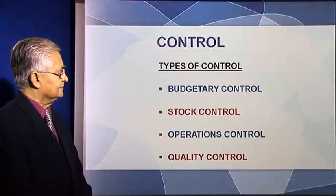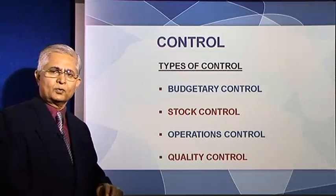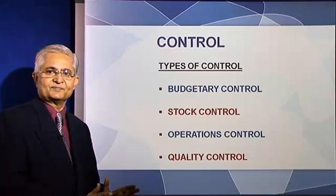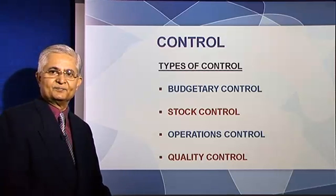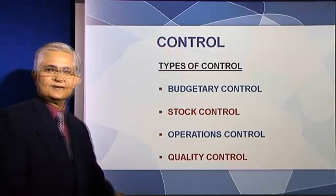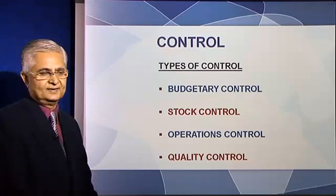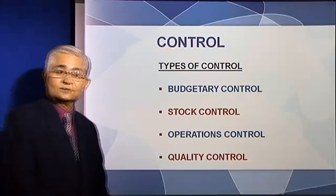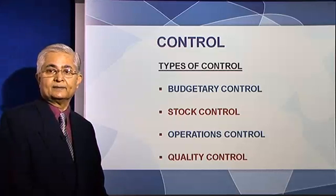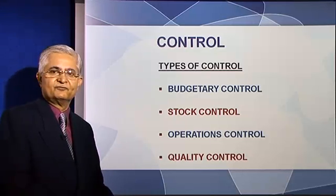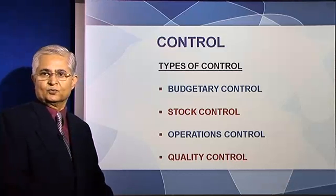For instance, look at budgetary control. What is the essence of budgetary control? Budgetary control is converting that particular activity into inputs and outputs in a financial sense. So, budgetary control is converting the activity into financial terms. Another type of control is stock control. Stock control is easily understood when it comes to physical stocks — what we understand as inventory control.